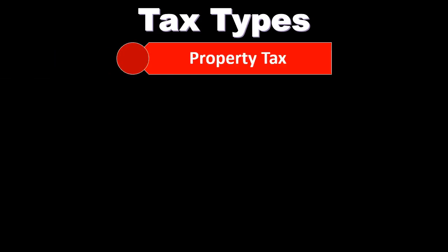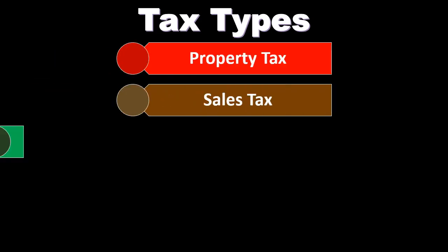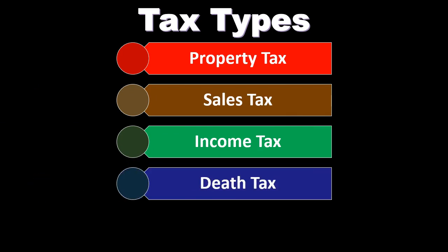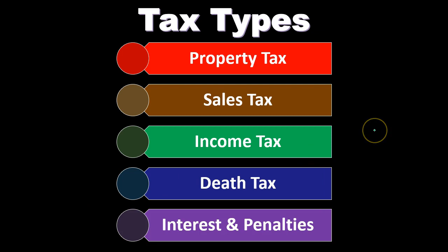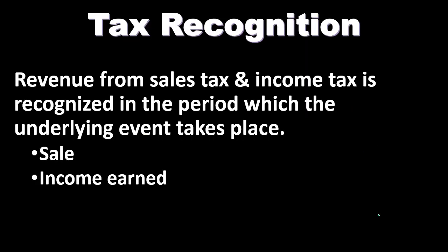Tax types include property taxes, sales taxes, income tax, and death tax or estate tax. Interest and penalties can also be included in taxes. These are the taxes that can be assessed by government agencies, which have the right to tax. If taxes aren't paid, they have the ability to assess interest and penalties, which are considered part of taxation.